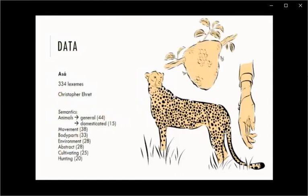Some 20 lexemes have to do with hunting, including words relating to honey. There were also some smaller categories and some adjectives, quantifiers, numerals, and possessive pronouns.